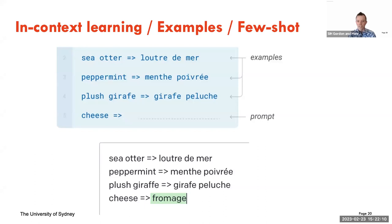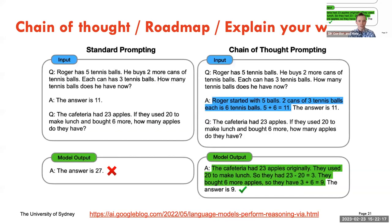And in fact it does — it tells us 'fromage.' This is just an example using GPT-3 in OpenAI's playground. The next level involves chain-of-thought prompting: in a standard prompt on the left, you give it a word problem — Roger has five tennis balls, he buys two more cans, each has three tennis balls, how many does he have? — and you give it the answer: 11.